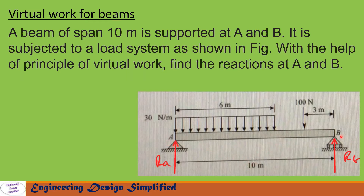Shown is a simply supported beam of span 10 meters supported at A and B. A UDL of 30 Newton per meter is applied from end A up to 6 meters, and a point load of 100 Newtons is applied at a point 3 meters left of point B. In this problem we need to find reactions at A and B using the principle of virtual work.